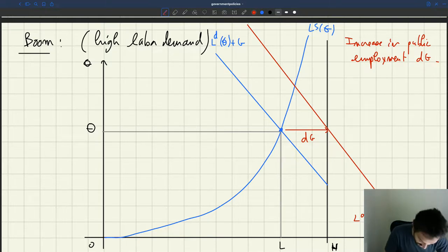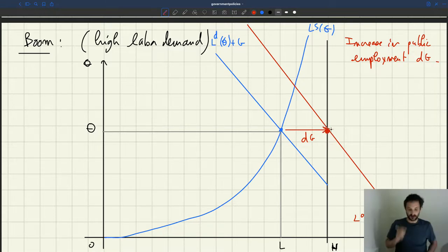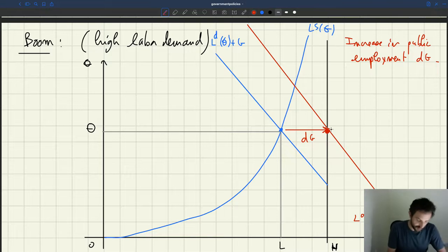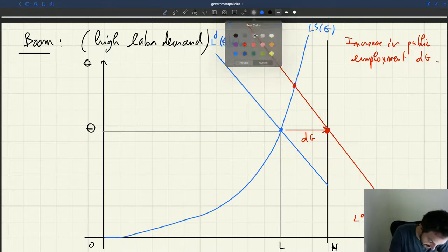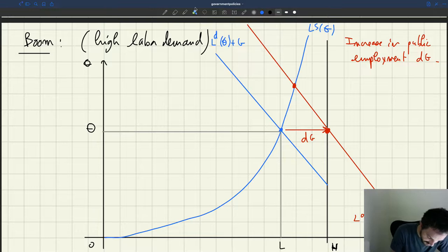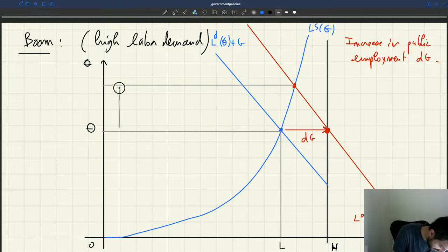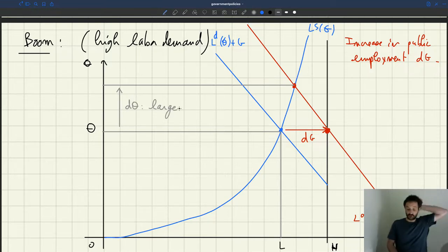So initially, if tightness hasn't changed, we would have moved to this point here. Okay. But what we can see is that in equilibrium, of course, the tightness is not the same. Now we have a new tightness that's like this.